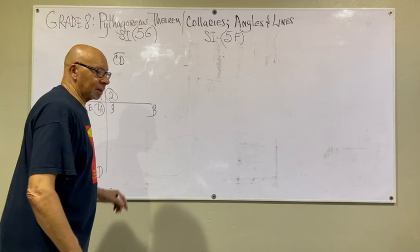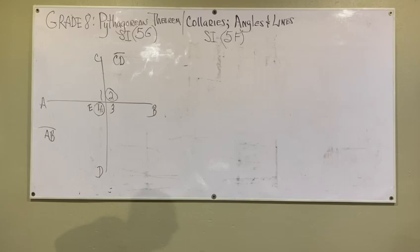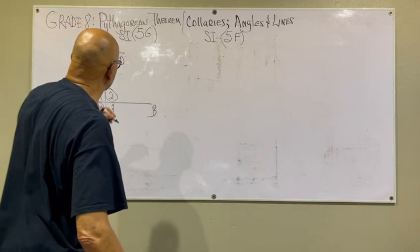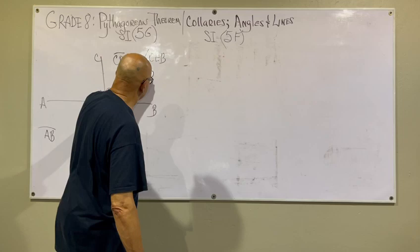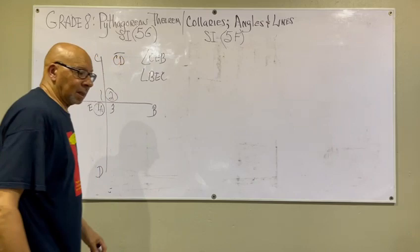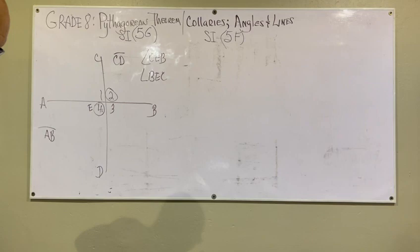C-E-B. How would you, other than saying angle two, how could you label it? C-E-B. C-E-B. What other choice you have? B-E-C. B-E-C. So you would write it like this. Angle C-E-B or angle B-E-C. Why is the E in the middle? You don't know.